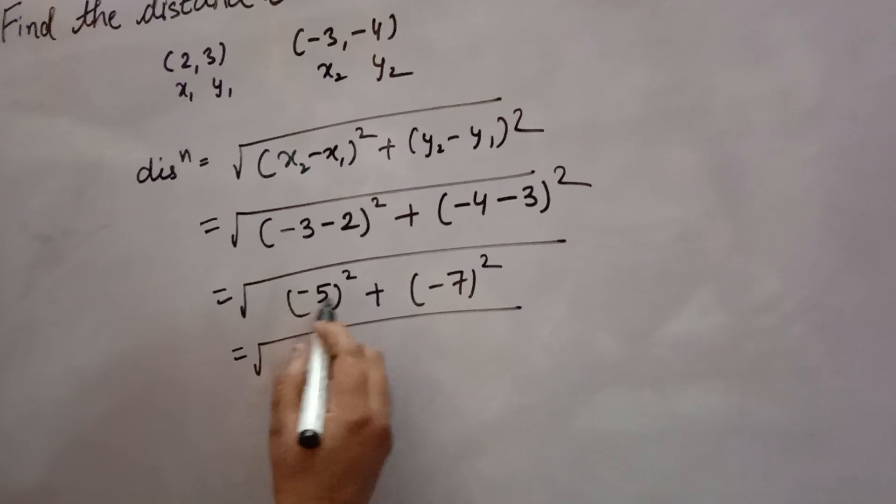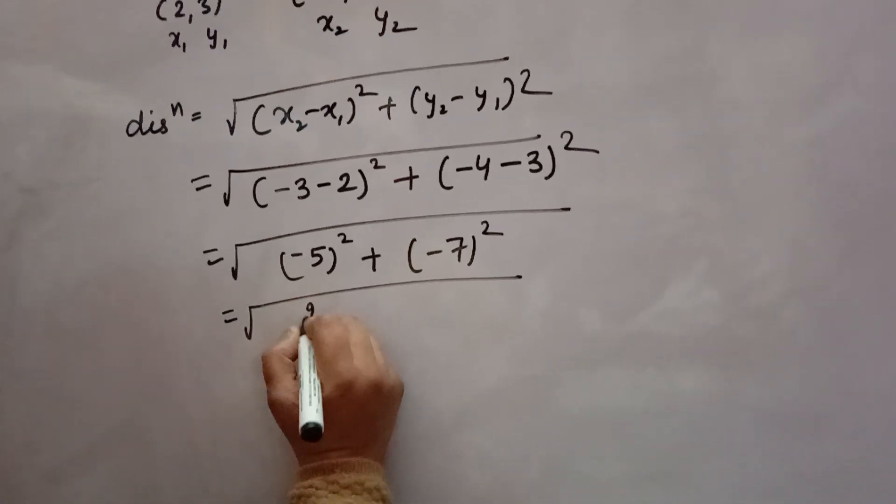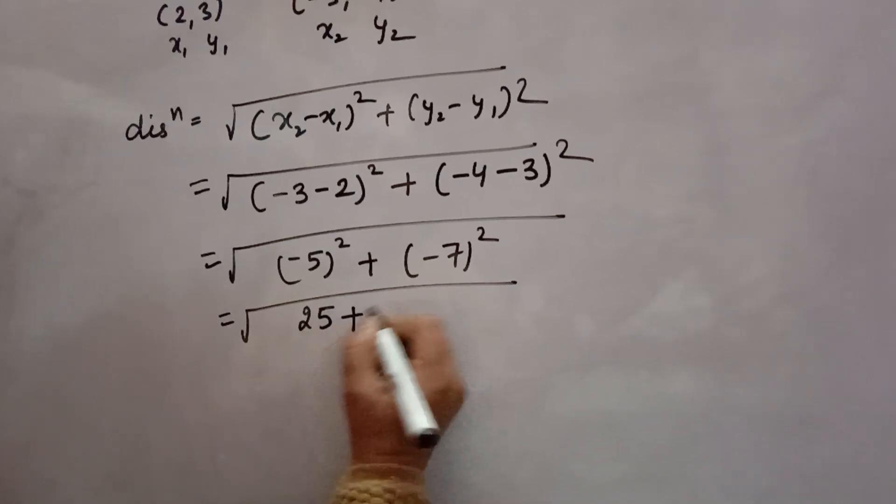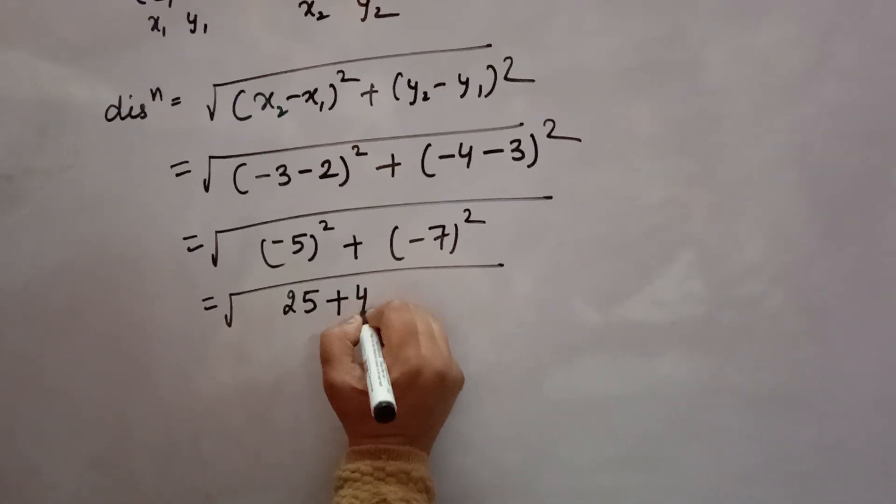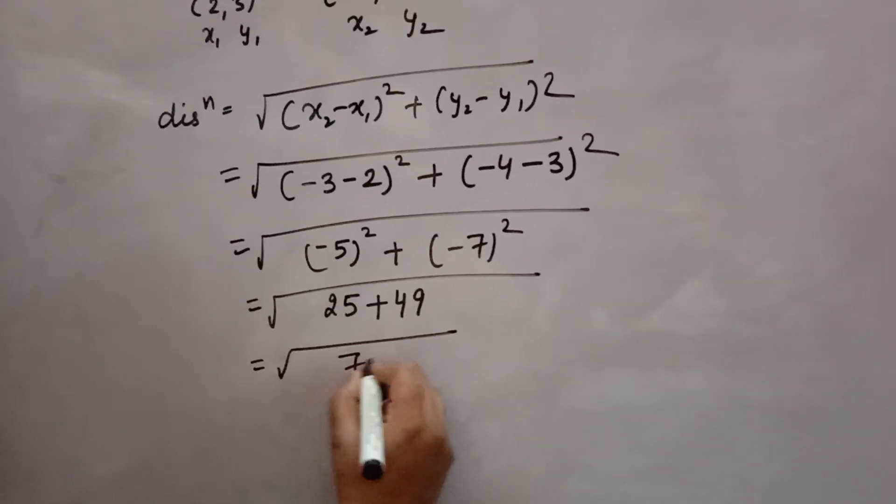Minus 5 square, minus 5 into minus 5, minus minus plus 5 into 5, 25. Same way, minus 7 into minus 7 is 49. You will add them, you will get 74.